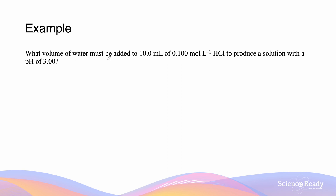This question asks: what volume of water must be added to 10 mL of a 0.1 mol/L HCl solution to produce a solution with a pH of 3.0? We start with 10 mL of this concentration, and we're diluting the solution to achieve a pH of 3.0. We can first work out the new concentration corresponding to pH 3.0, then determine how much dilution was needed.